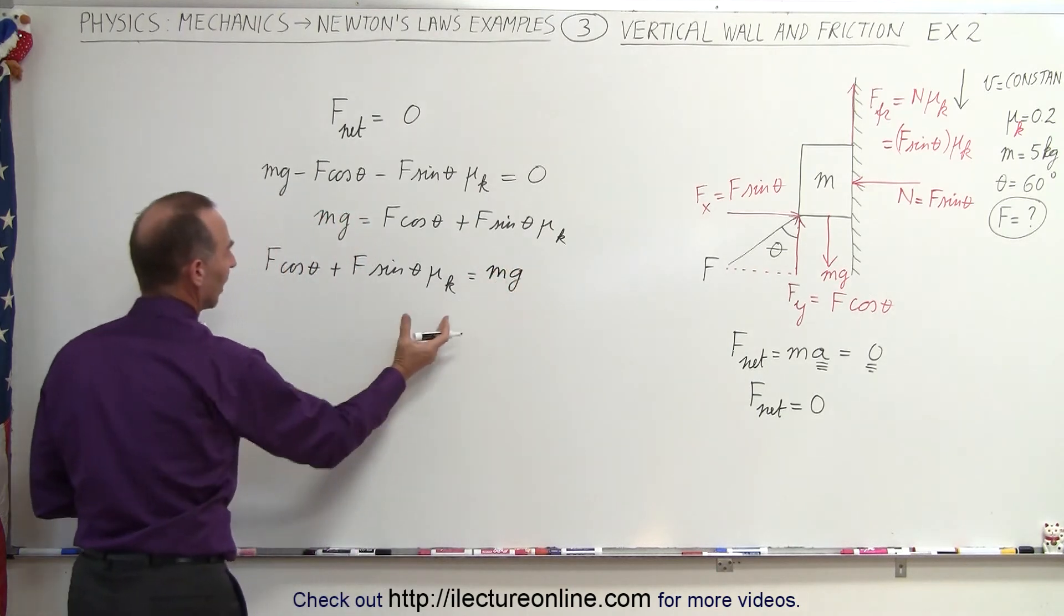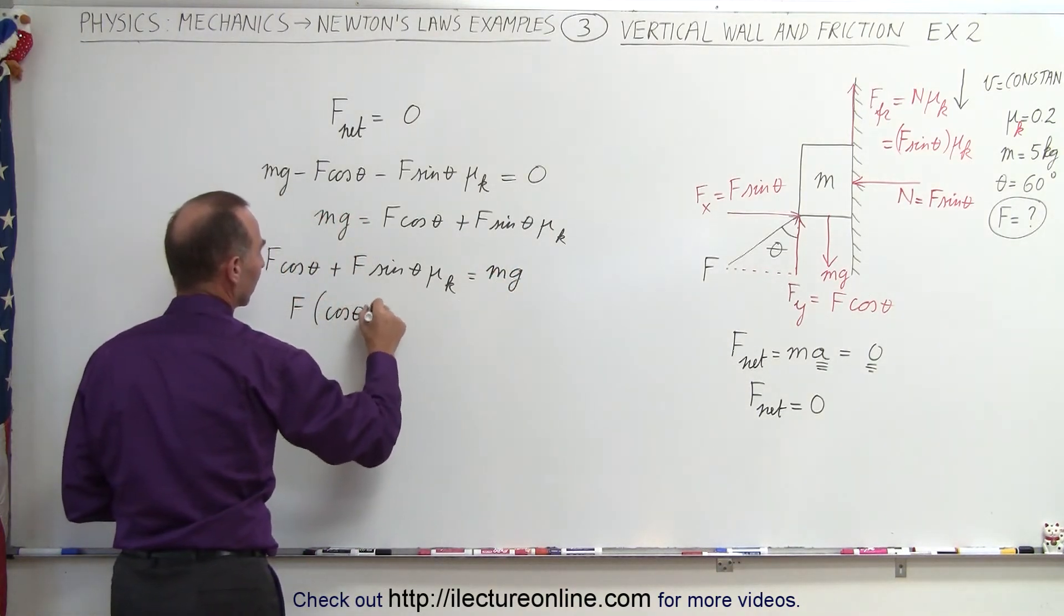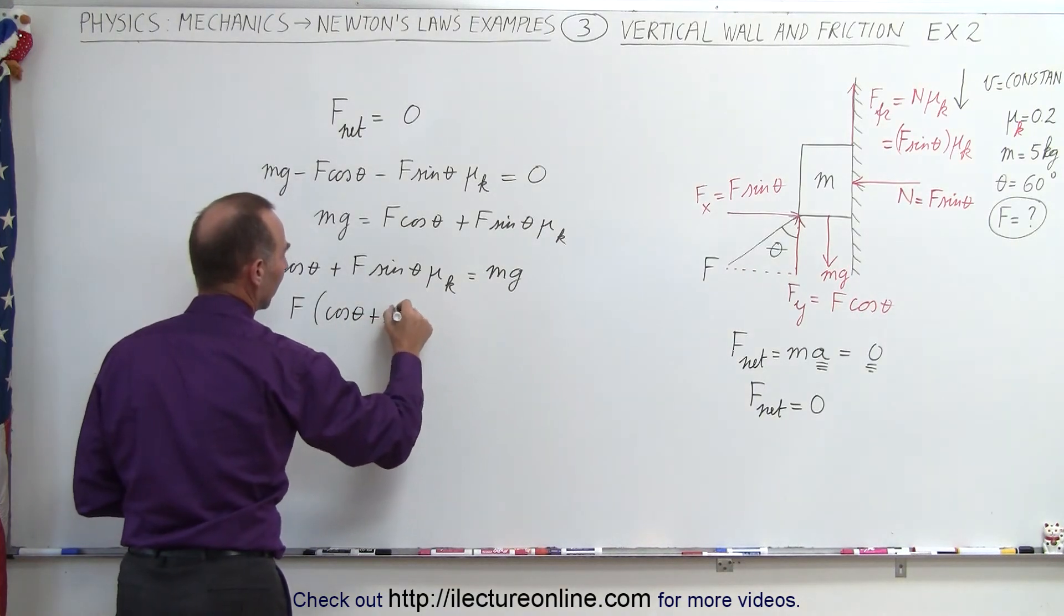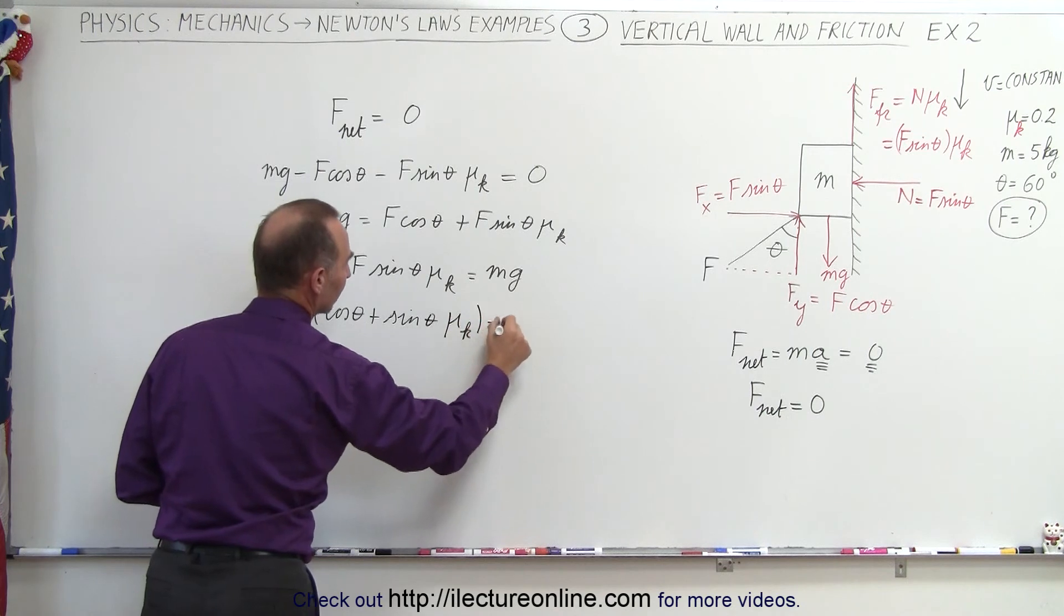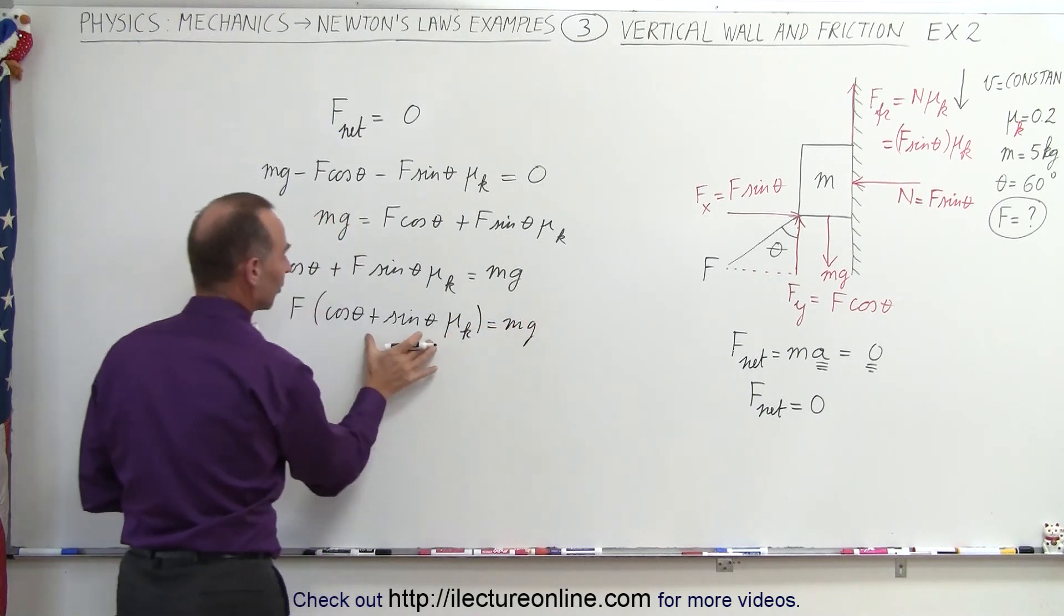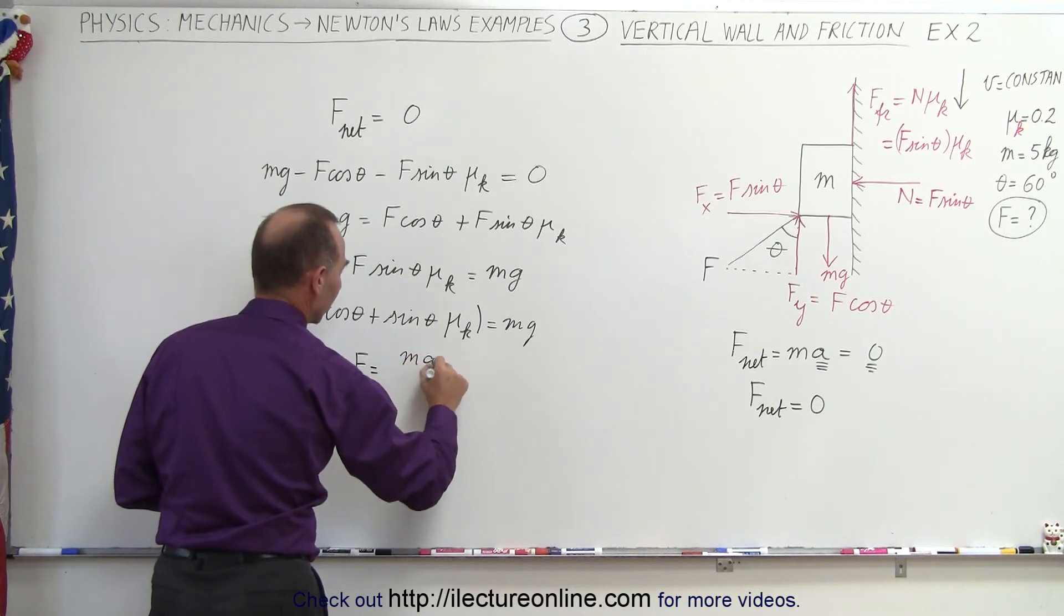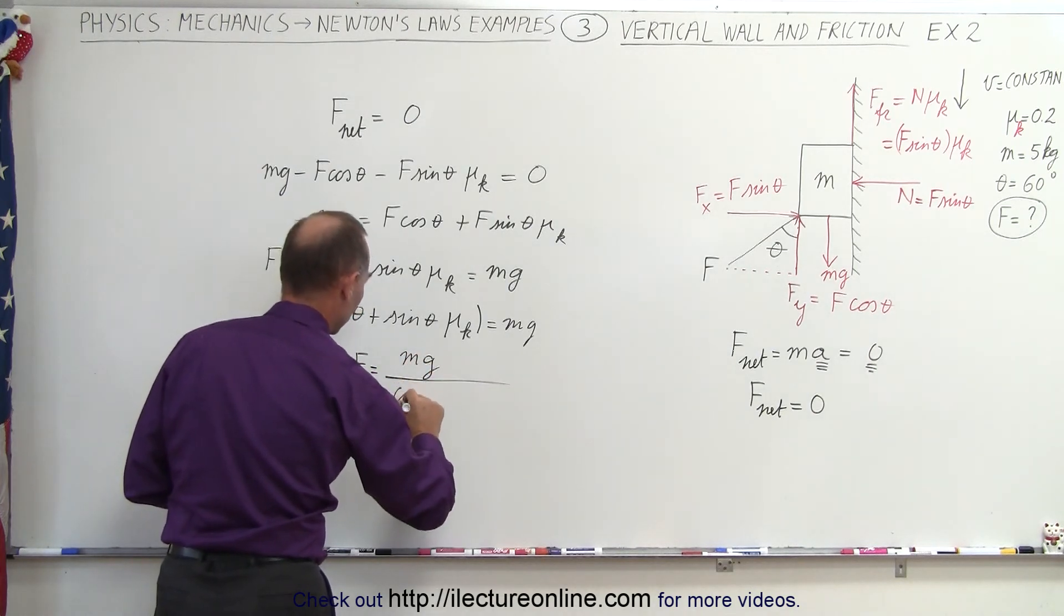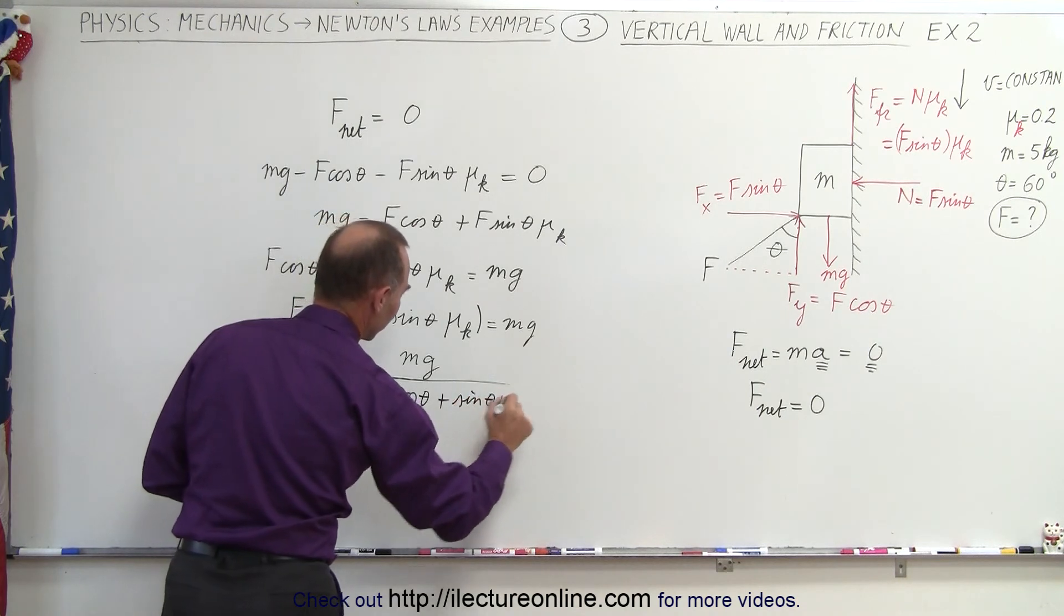So I simply turn the equation around and now factor out an f. f times the cosine of theta plus the sine of theta times mu sub k is equal to mg. And then we divide both sides by this quantity. We get f is equal to mg divided by the cosine of theta plus the sine of theta times mu.